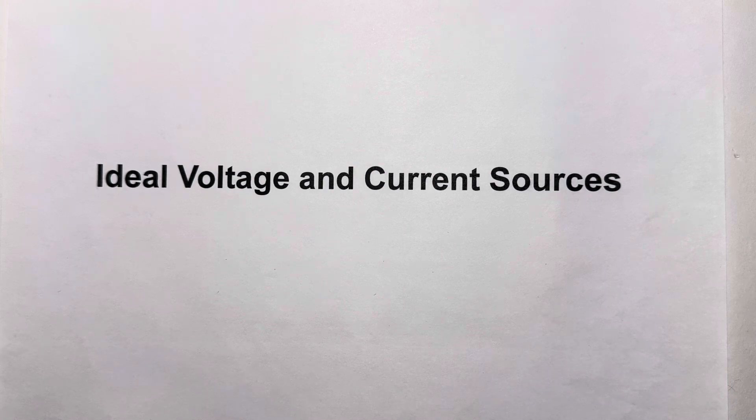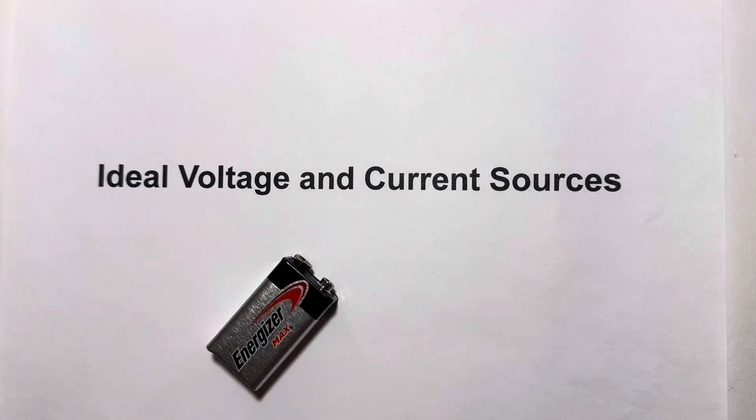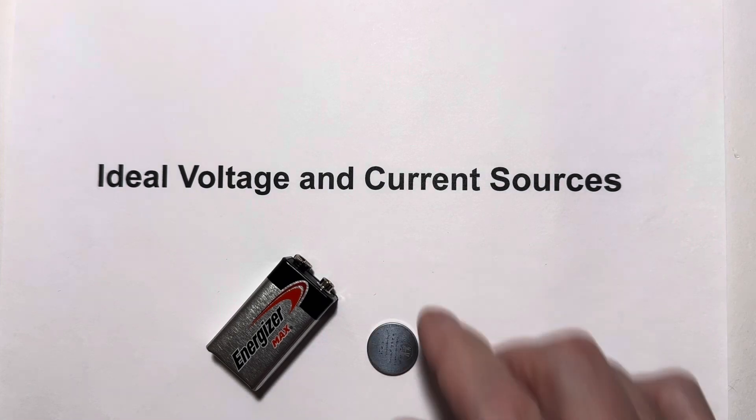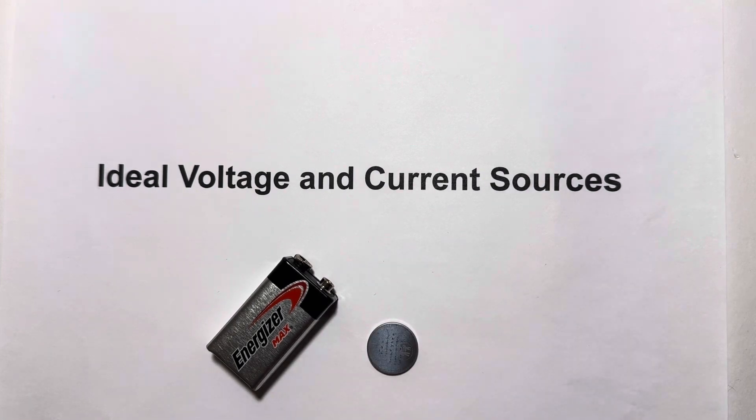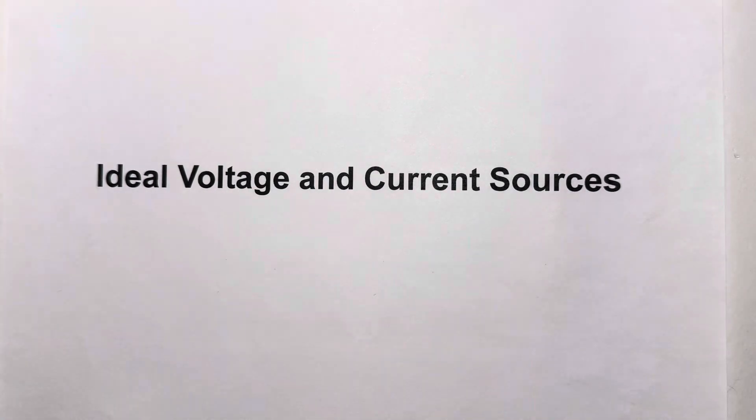Just about everybody has a pretty good handle on what a voltage source is. You can go down to your local convenience store and buy them. Here's a few examples: a nine volt battery and a three volt lithium cell. So voltage sources are very common. Current sources, well, not so much. And because they're less common, they're a little bit mysterious. But today I hope to dispel some of that mystery.